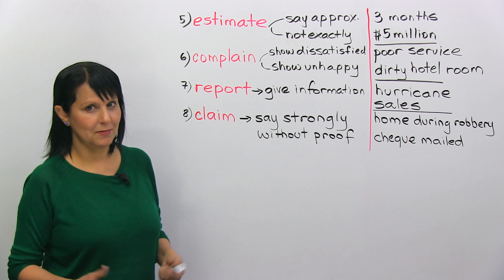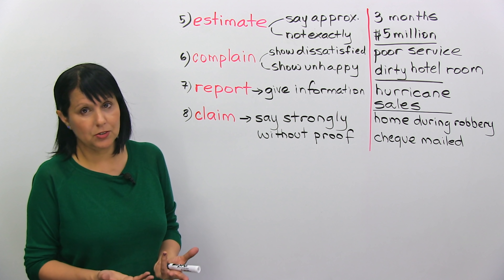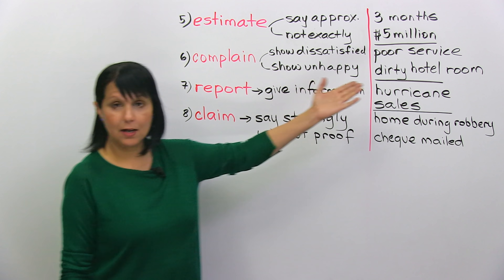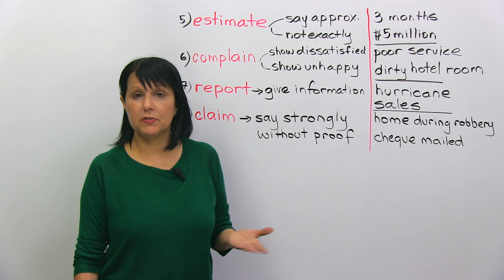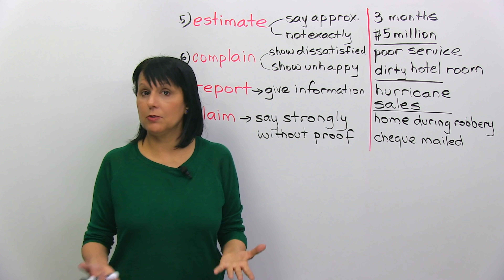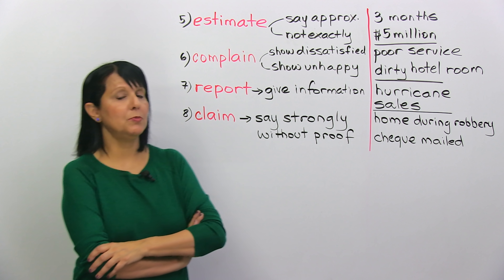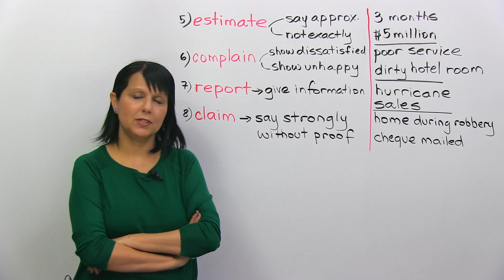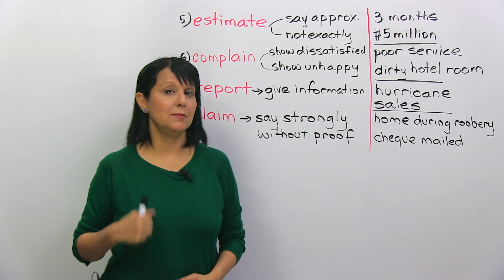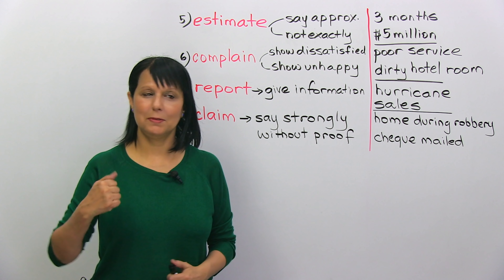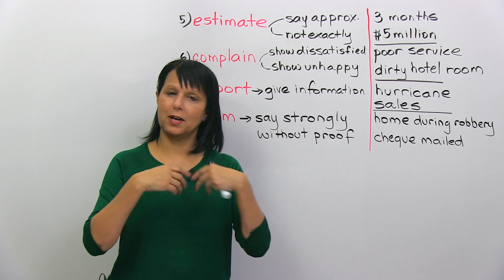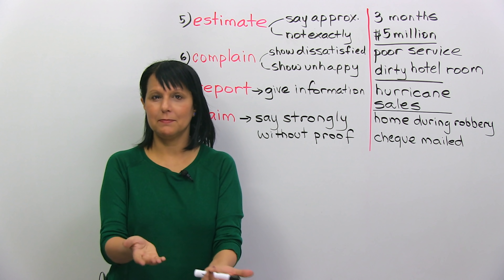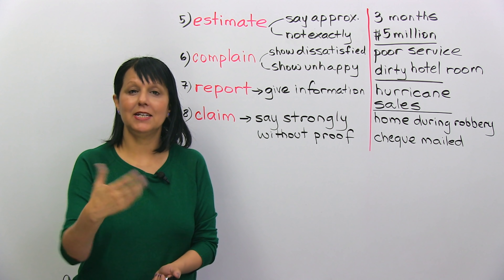Number six is 'complain.' When we complain, we show that we're unhappy or dissatisfied with something. For example, you could complain about the poor service in a restaurant, or complain about a dirty hotel room. When people are complaining, you can usually tell because they're not happy — sometimes they're disappointed, sometimes a little more forceful, but there's generally no happiness on the face.